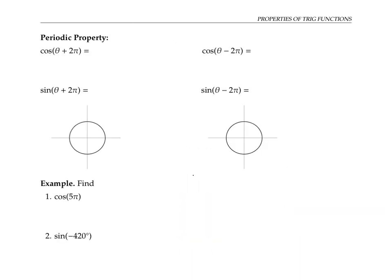The first property is what I call the periodic property. This says that the values of cosine and sine are periodic with period two pi. What that means is that cosine of an angle plus two pi gives the same thing as cosine of the angle. We're assuming that theta is measured in radians. If we want to measure theta in degrees, the similar statement is that cosine of theta plus 360 degrees is equal to cosine of theta.